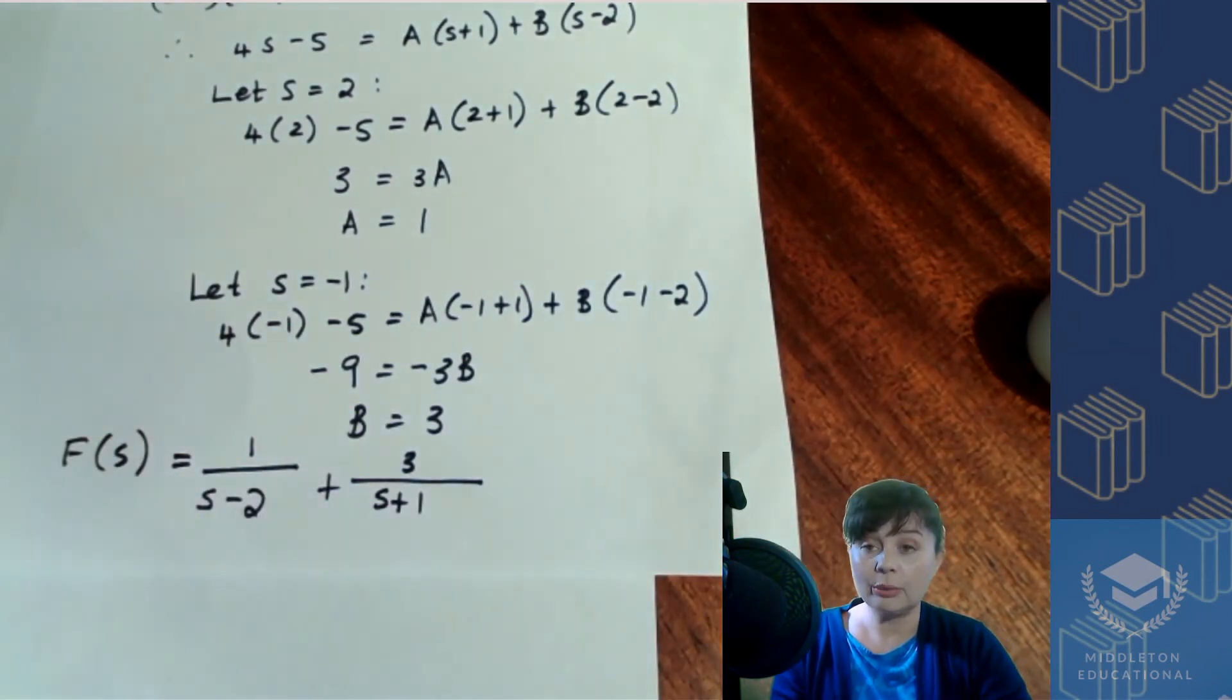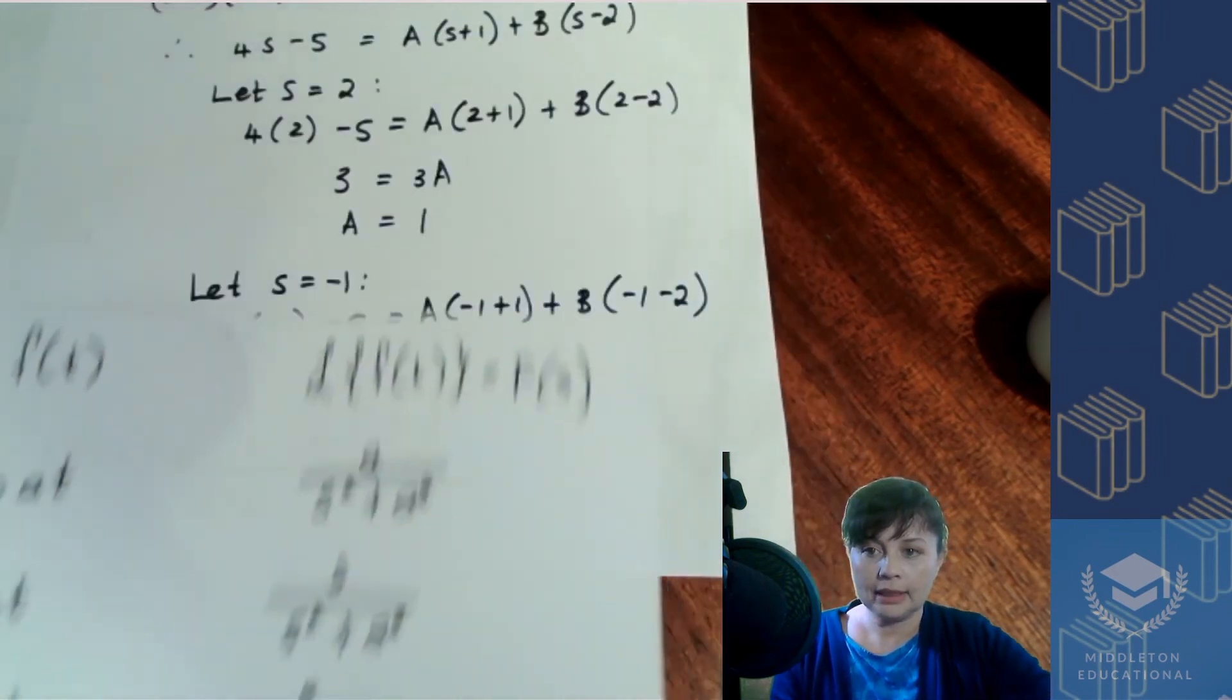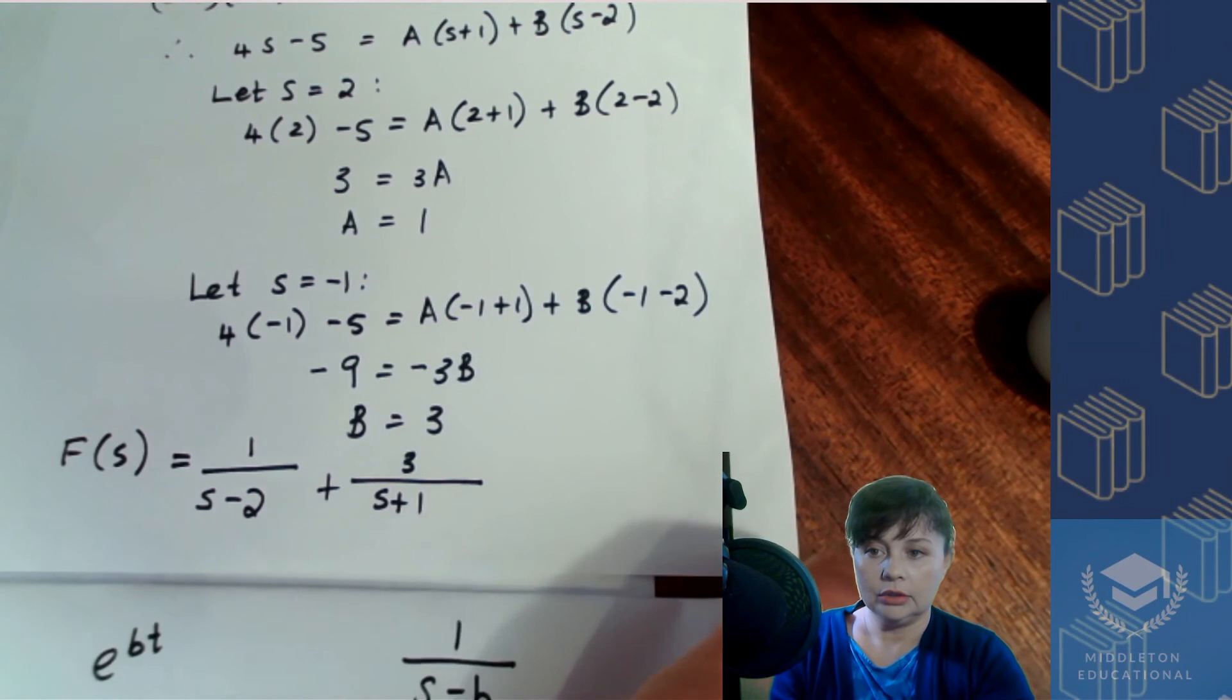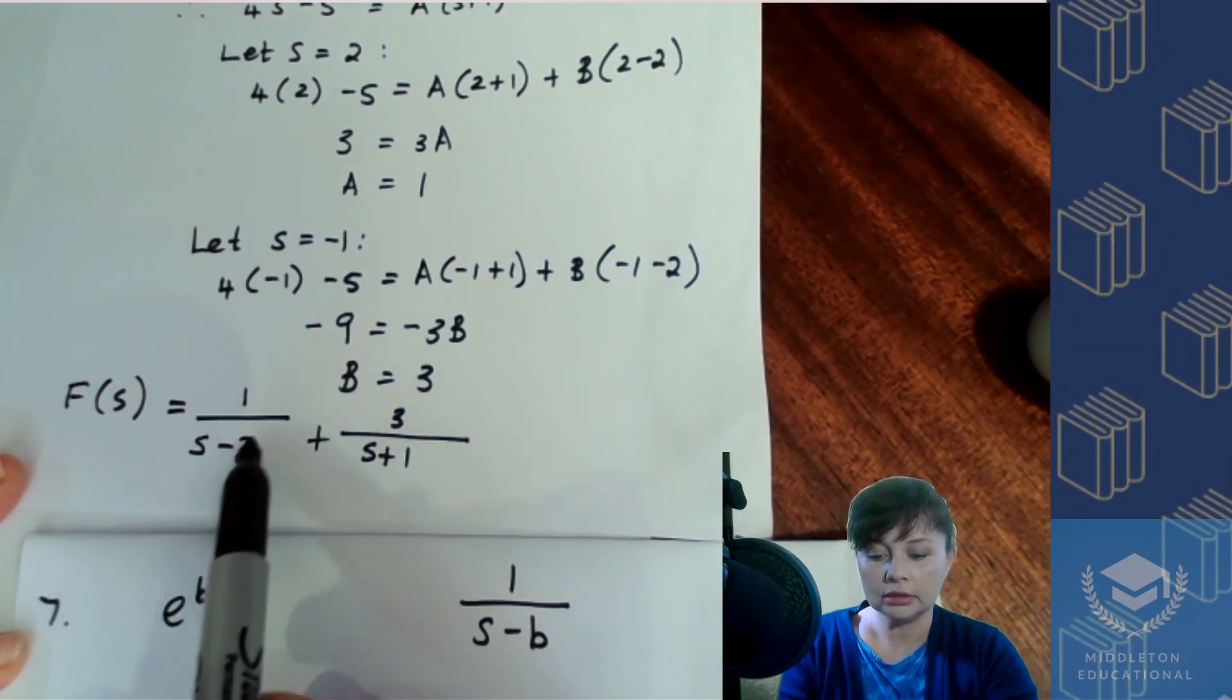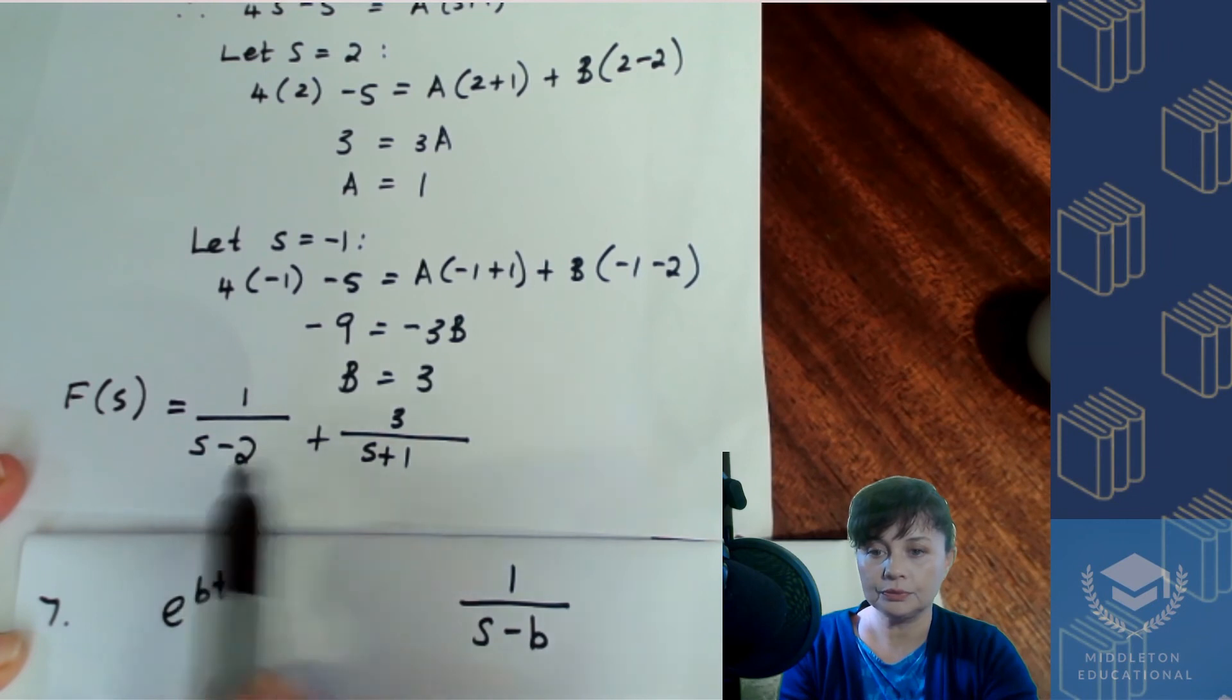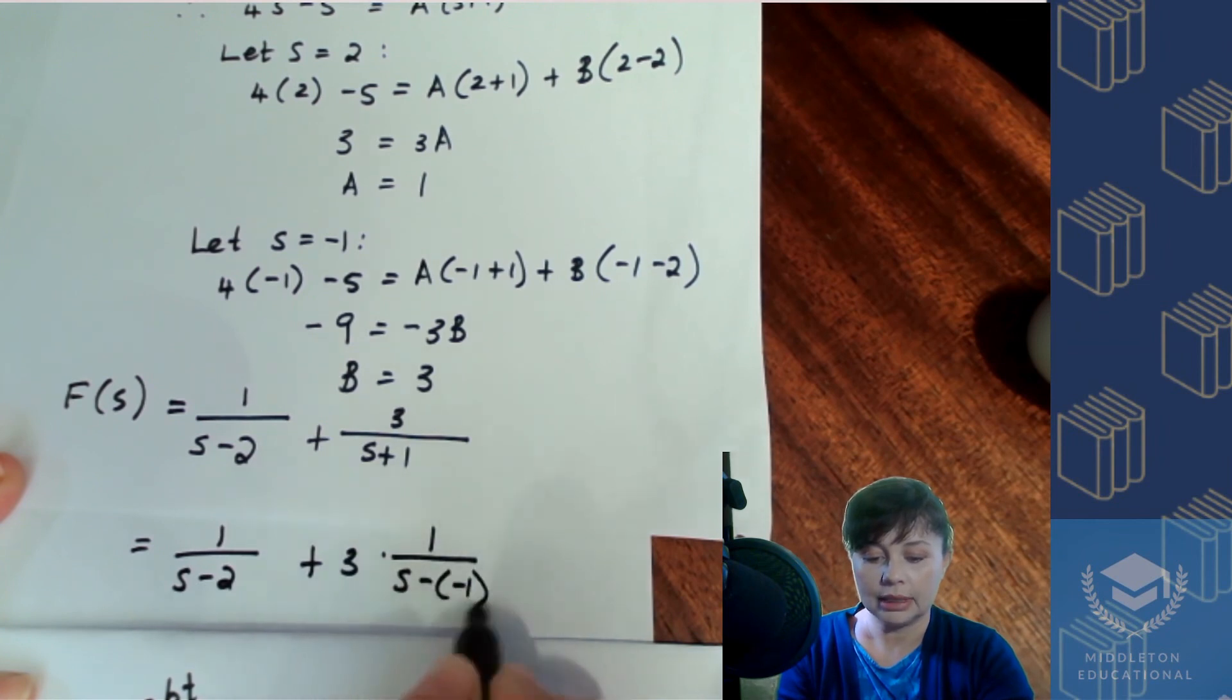Now, if we look at our denominators and we go back to the table, you'll see that that is number 7. Now, I've just rewritten that number 7 here so that it's easier for us to see. So you see you've got s minus b. So in this case, let me just fold this so that you can see it a bit clearer. That is on our formula sheet. So you'll see in your first term, you've got minus 2. So in this case, b is going to be 2. In your second term, you've got plus 1, which means that b is going to be minus 1. So we can write that as 1 over s minus 2, 3 times 1 over s minus minus 1.